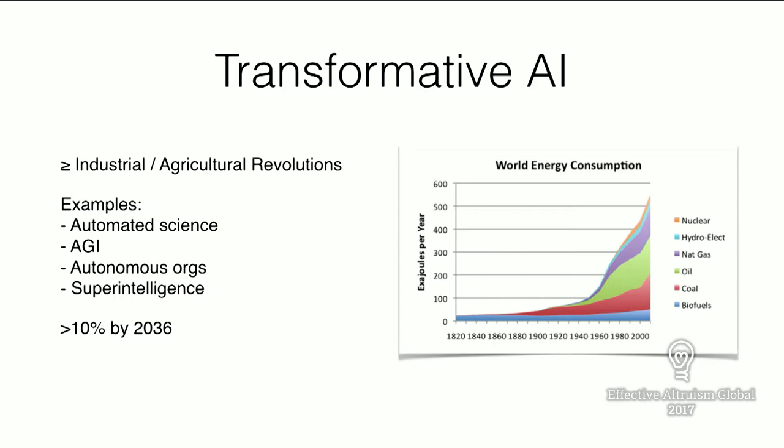That's intended to capture a lot of possible scenarios. We might see AI progress lead to automated science and technology development, causing rapid increases in technological progress. We might see artificial general intelligence — AGI — meaning AI systems that can do anything a human can do. We might see systems that can operate organizations autonomously — companies, nonprofits, parts of government. And looming over all of this is the expectation that AI won't stop at human-level competence, but will lead to superintelligent AI systems.